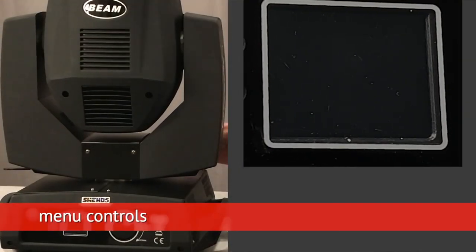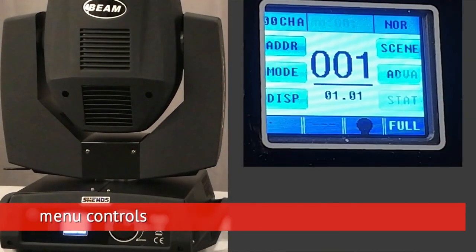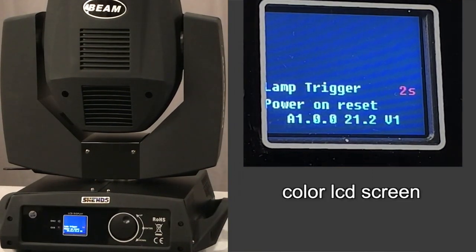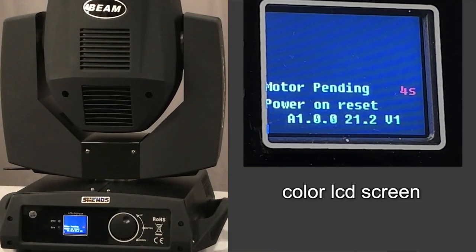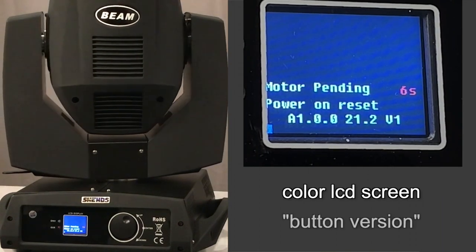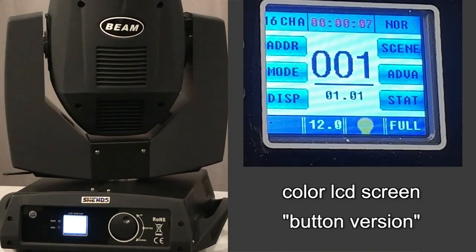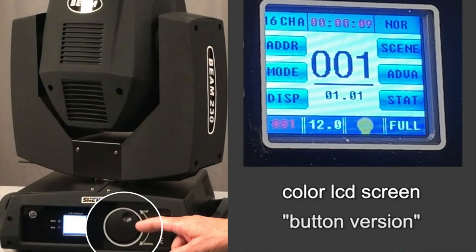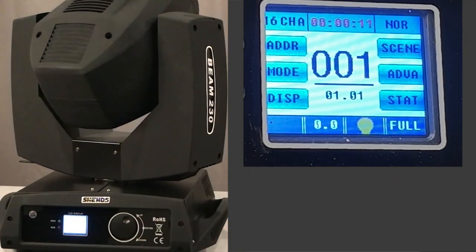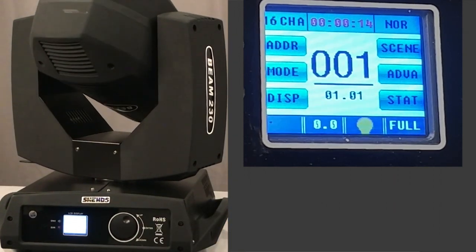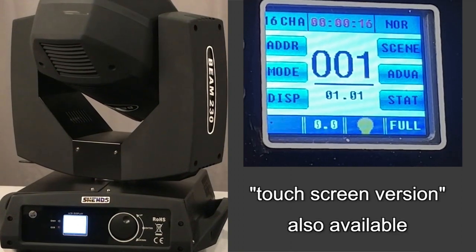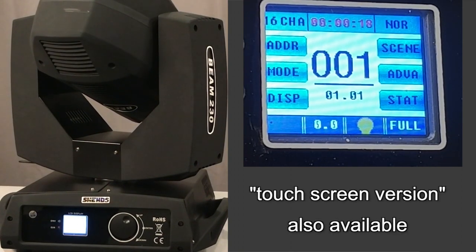Now let's flip the switch and let it power up. Sheds makes two versions of this light. This one is called the button version, where you can access all the menu functions with this rotary dial. But they also make a second version that has the same rotary dial, but that one has a larger touch screen for even easier control.